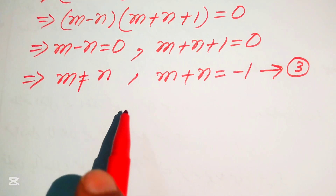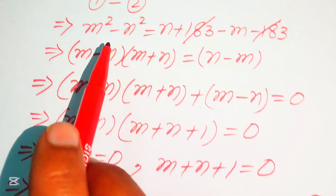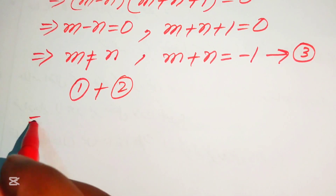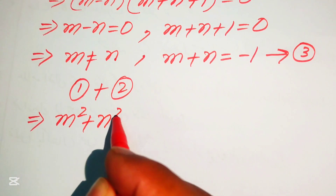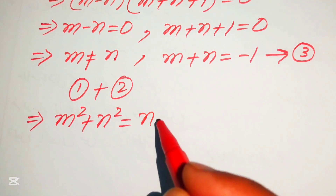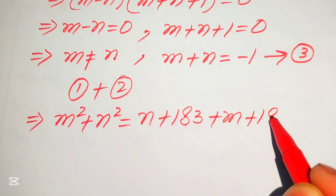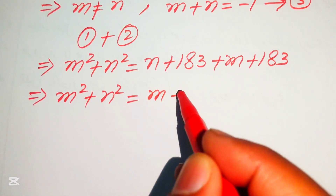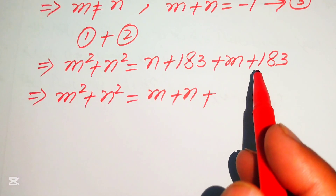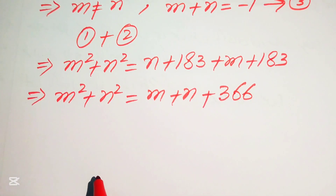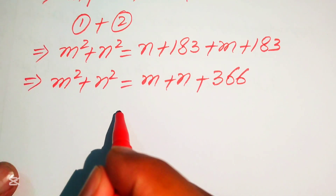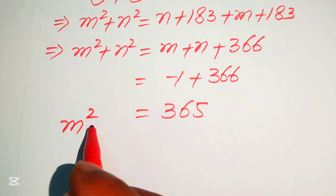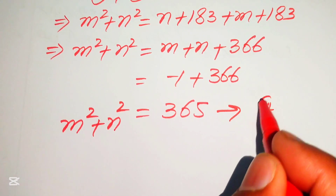Now we add equation number 1 and equation number 2. Adding left hand sides and right hand sides gives m squared plus n squared equals n plus 183 plus m plus 183. Simplifying the right hand side: m squared plus n squared equals m plus n plus 366. Substituting m plus n equals minus 1 from equation 3, we get m squared plus n squared equals minus 1 plus 366 equals 365. We call this equation number 4.